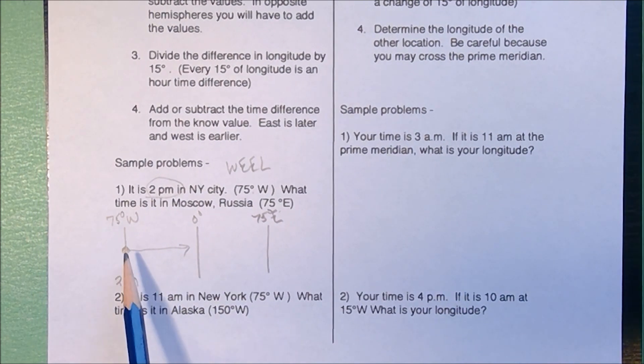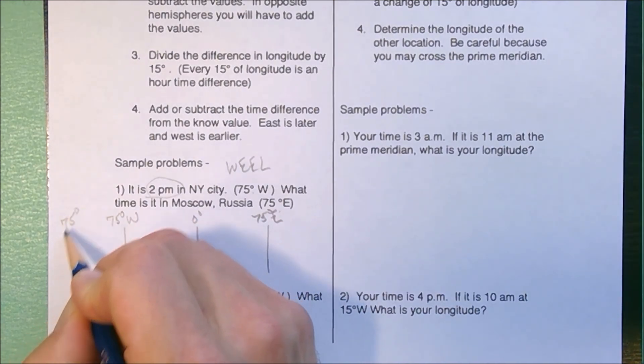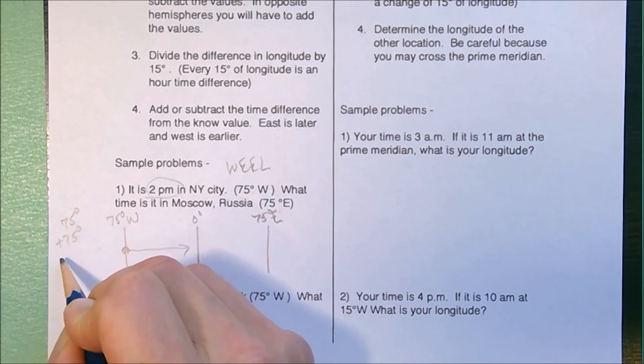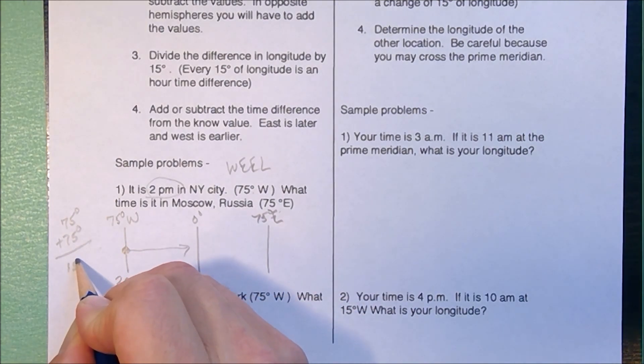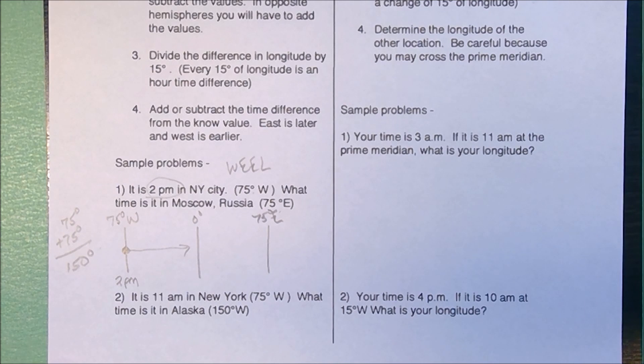Mr. Brightson always likes the idea: opposites add, same subtract. I'm crossing the prime meridian, so I'm going to do 75 degrees plus 75 degrees, telling me my two locations are 150 degrees apart.